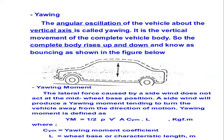The next type of force is yawing — the angular acceleration of the vehicle about the vertical axis. There is also bouncing, which is the vertical movement of the complete vehicle body where the complete body rises up and down. Its mathematical formula is ½ × ρ × V² × A × (yawing moment coefficient) × L, where L is the wheelbase. Bouncing is basically created in the middle portion of the vehicle.